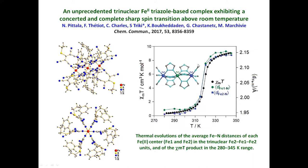This complex is the first one in which all three ferrum ions undergo a spin transition together. In previous complexes, only the central ferrum ion participated in the spin transition. This is why the complex is very interesting, and the authors were also interested in determining which ferrum ion is the leading one during this transition.